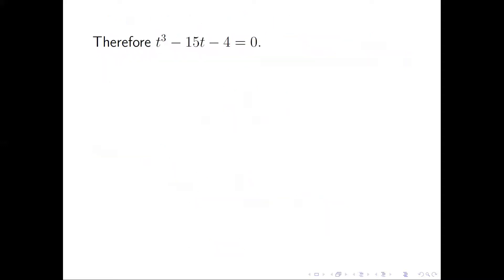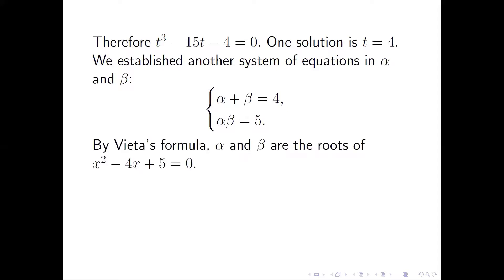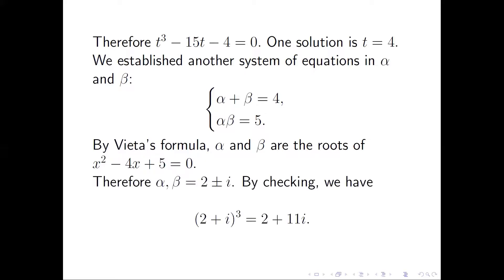This cubic equation in t has three roots. One solution is t = 4, so α + β = 4 and α · β = 5. By Vieta's formulas, α and β are roots of x² − 4x + 5 = 0. This equation has two complex roots: 2 ± i. We don't know which is α and which is β, but by checking we confirm that 2 + i is α, and we are done.